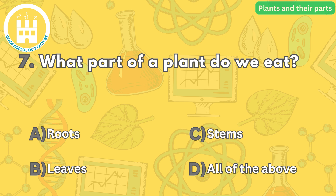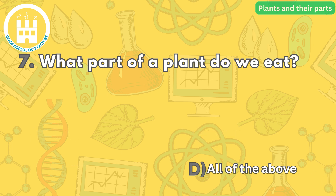Question number seven: what part of a plant do we eat? The correct answer is letter D — all of the above. Different parts of plants are edible depending on the plant. For example, we eat carrots (roots), lettuce (leaves), and celery (stems).